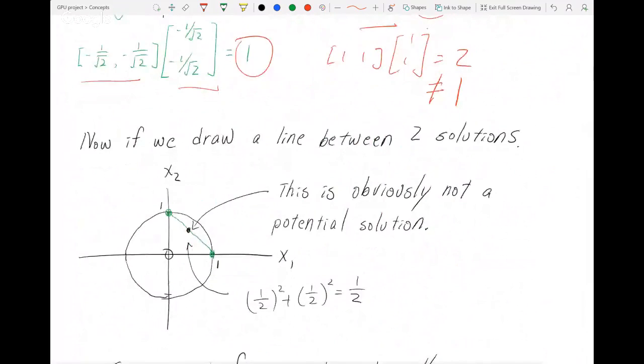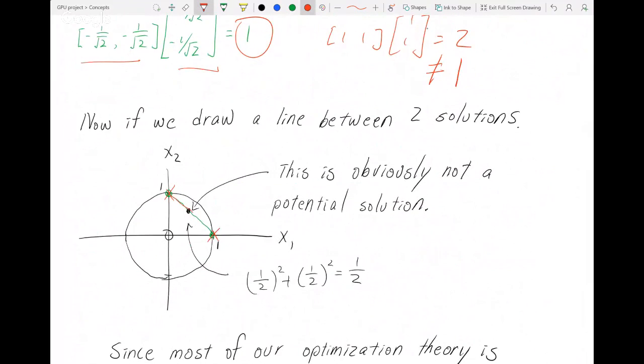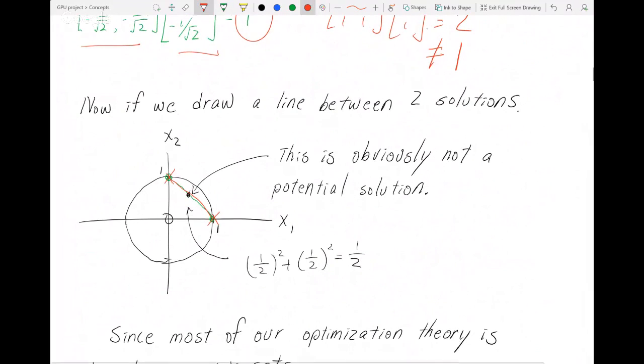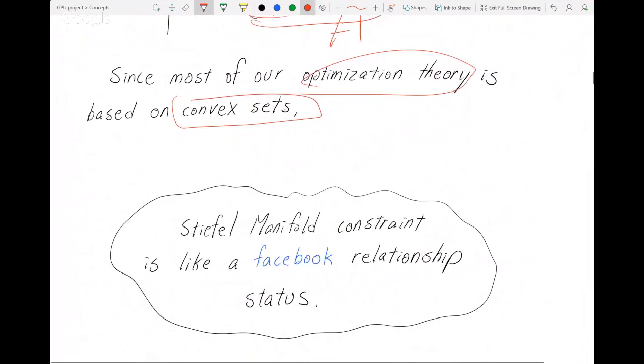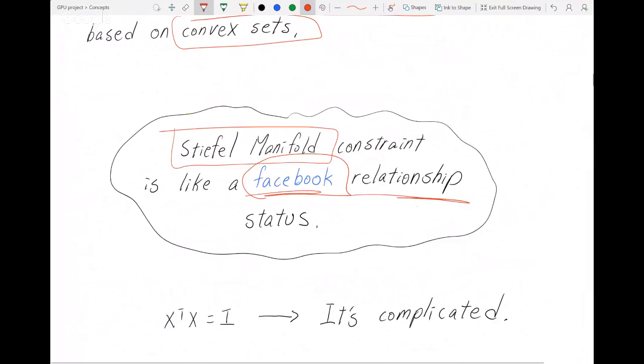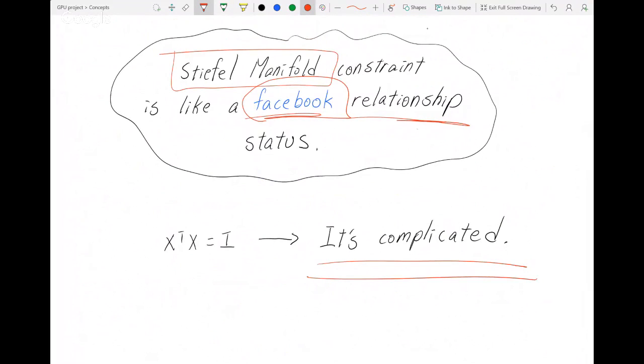I think I've made it clear it has to be on the circle. If we pick two possible solutions and draw a line between them, obviously this line is not on the circle. For example, if we pick this point, it doesn't equal 1. Since most of our optimization theory is based on convex sets - convexity has very clean mathematical approaches to solve them - Stiefel manifold, this orthogonality constraint, is like a Facebook relationship status: it's complicated.